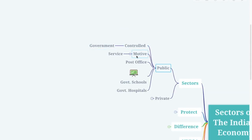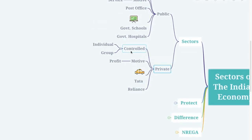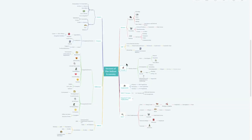Finally, there are two more sectors: public and private. The public sector is controlled by the government and its motive is to serve — examples include post offices, government schools, and government hospitals. The private sector is controlled by an individual or a group of people and its motive is to make profit — examples include Tata and Reliance. That's it for today, see you next time, thank you.